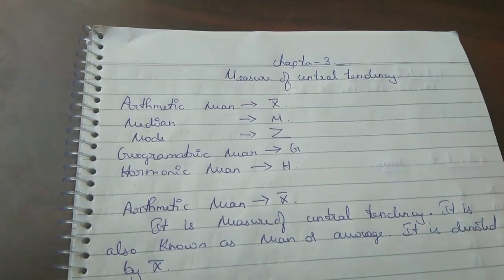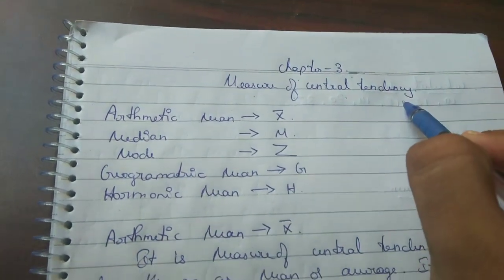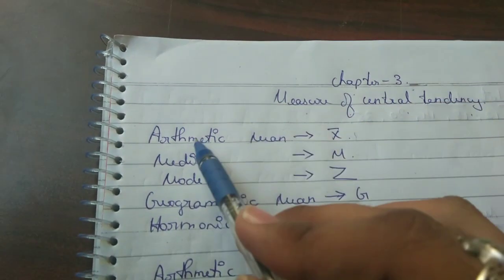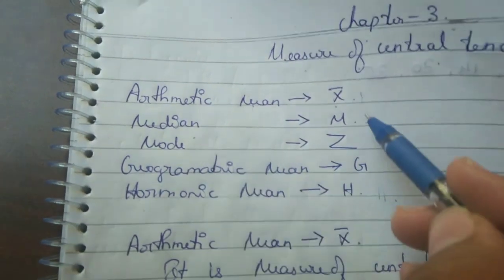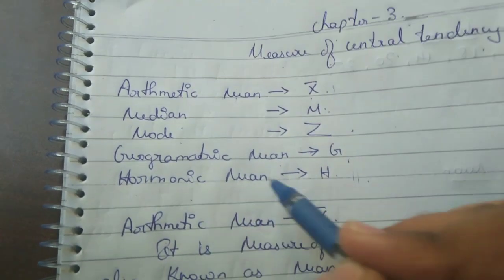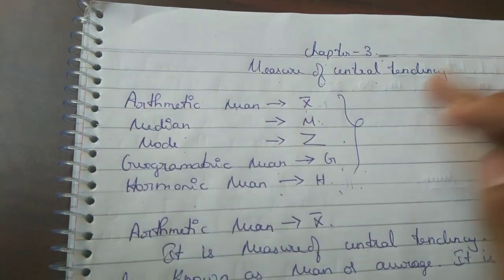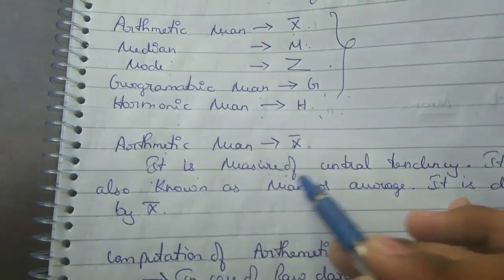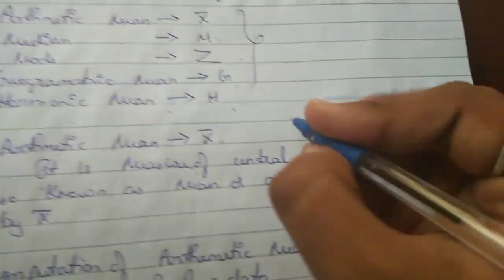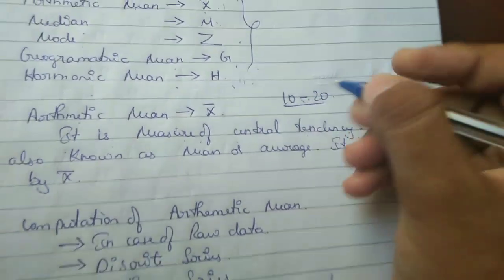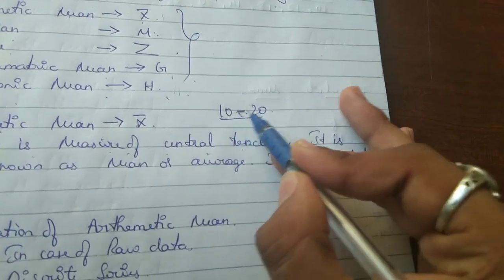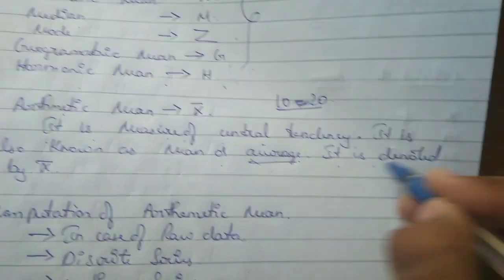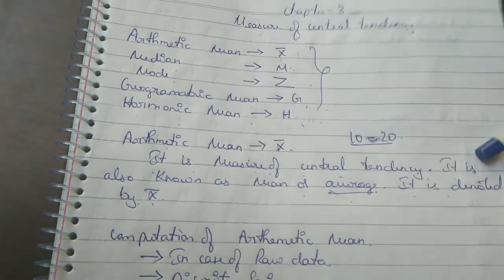Welcome to Top Education. In this session we will learn Chapter 3: Measures of Central Tendency. First we will know some general terms and then move to the sums and some explanation. Arithmetic mean is denoted by x-bar, median by M, mode by Z, geometric mean by G, and harmonic mean by H. Arithmetic mean, denoted by x-bar, is a measure of central tendency — also known as mean or average.